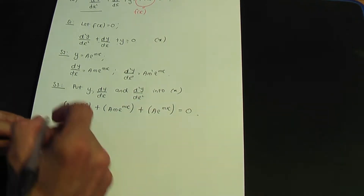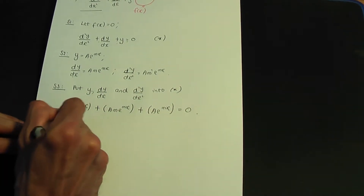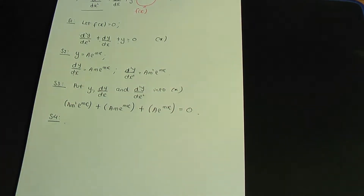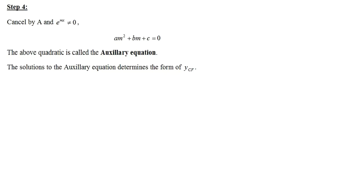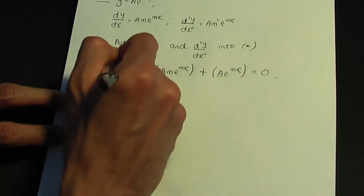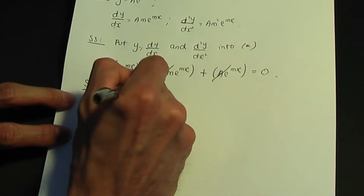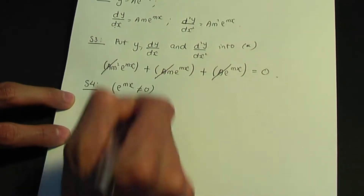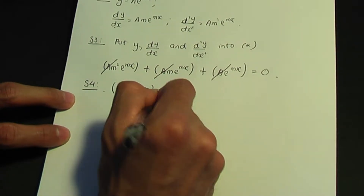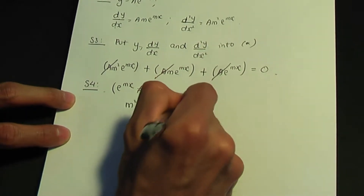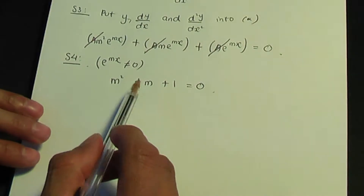Step number four: cancel the constant A. Since e^(mx) is non-zero, our auxiliary equation takes the form m² + m + 1 = 0.